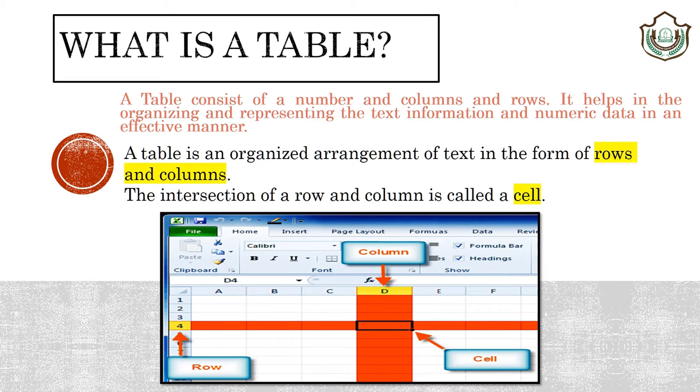Now what is a table? A table is an arrangement of data in vertical columns and horizontal rows, forming a cell where they join together.